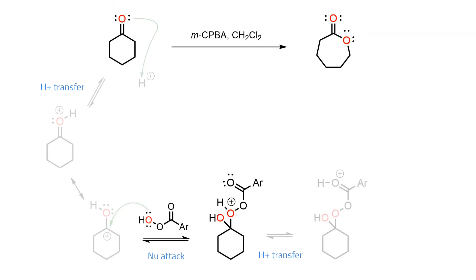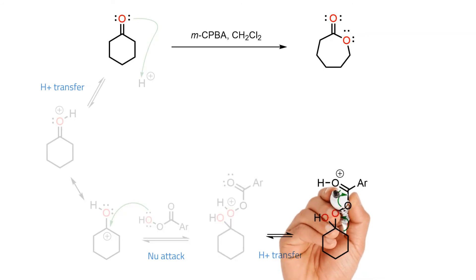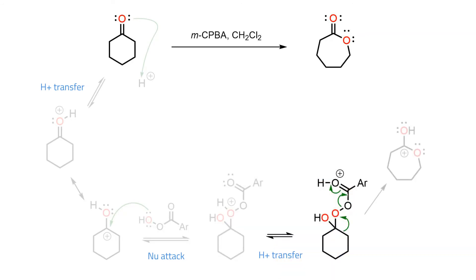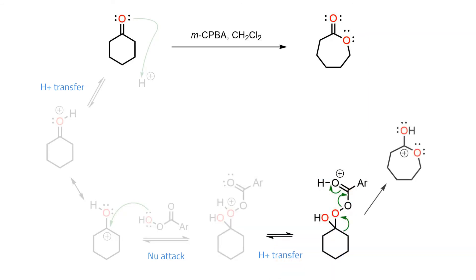A proton transfer then activates the system with a good leaving group and the rearrangement step has been set up. The system now has a chance to break the weak O-O bond by undergoing concerted rearrangement with migration of carbon to oxygen.